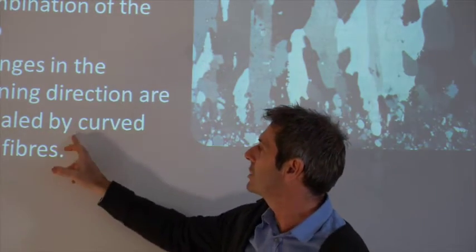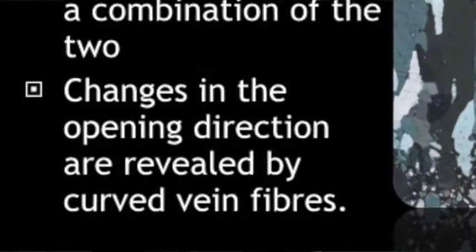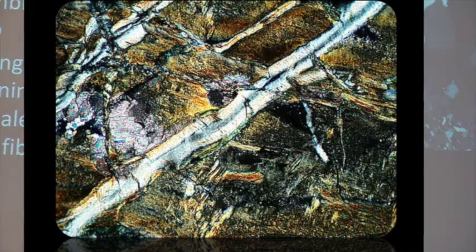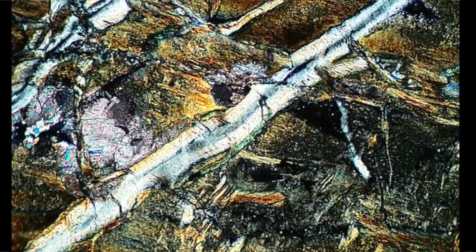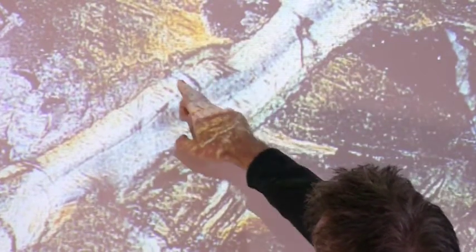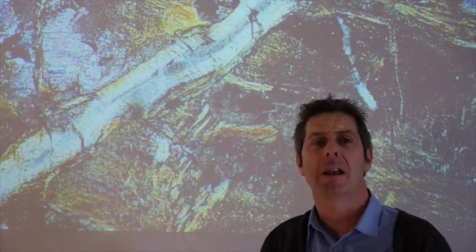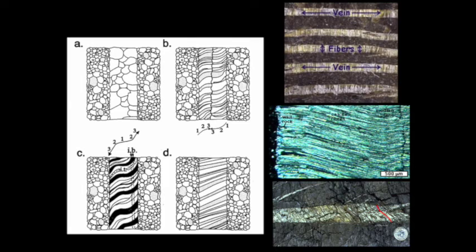You might have situations where the fibres become curved because the actual opening direction changes over time. Here's a photomicrograph of a vein in thin section, and you can see there are actually two episodes to this vein. The crystal fibres have grown into the space as the fracture opened, and they've tracked and recorded the opening of that vein.